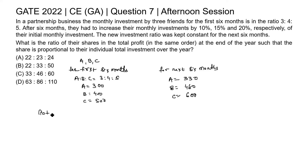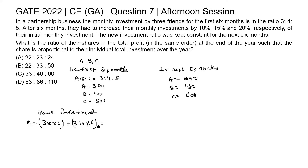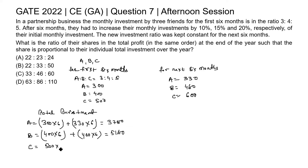Now we find the total investment for each person over the year. Total investment for A: 300 × 6 months + 330 × 6 months = 3780. Similarly for B: 400 for the first six months and 460 for the next six months, giving a total of 5160. For C: 500 for the first six months and 600 for the next six months.